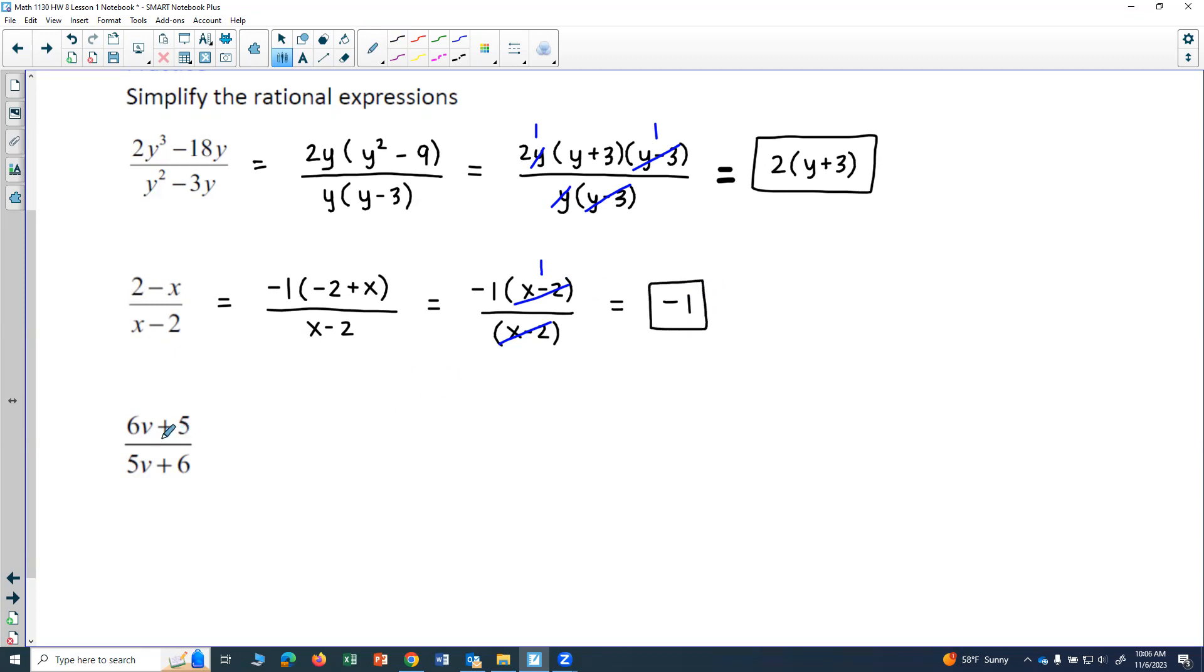All right, we have one more here. We have 6v plus 5 over 5v plus 6. Now, these are not the same because in the numerator, the 6 is attached to the v and the 5 is by itself. And in the denominator, the 5 is attached to the v and the 6 is by itself.